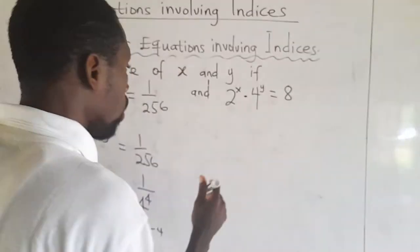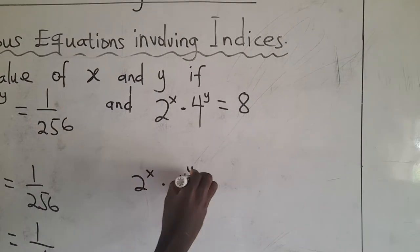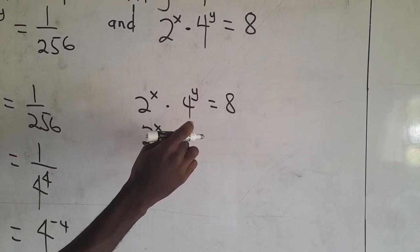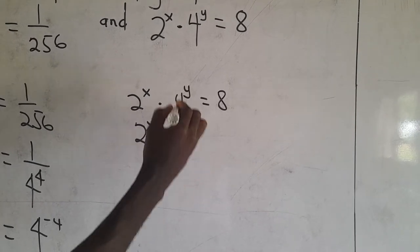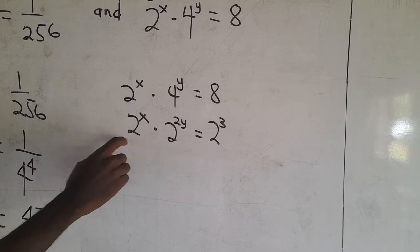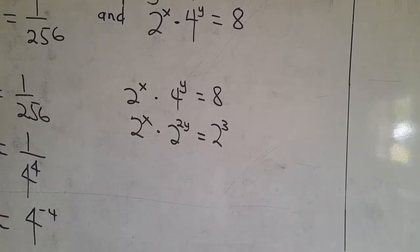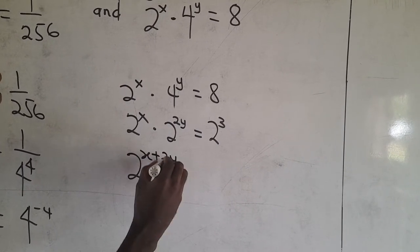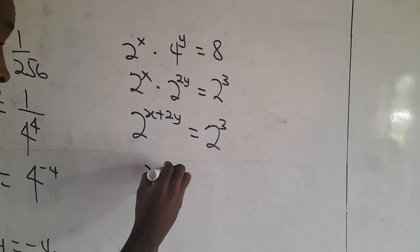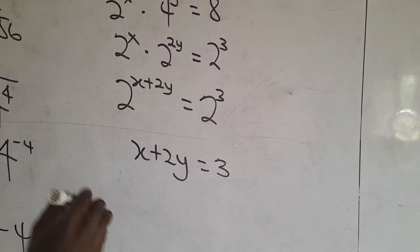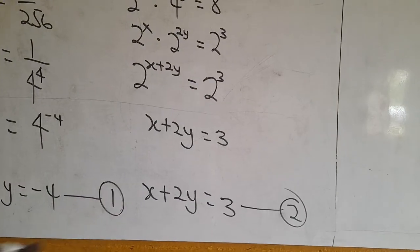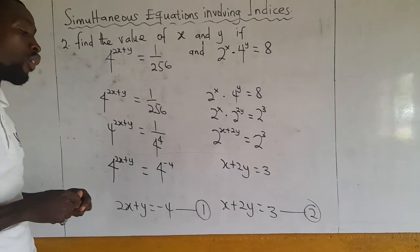Taking the second equation: 2 exponent x times 4 exponent y equals 8. We can change 4 to have a base of 2, since 4 is 2 exponent 2. So we get 2 exponent x times 2 exponent 2y. And 8 is 2 exponent 3. Since both indices are multiplying with the same base, we add exponents: 2 exponent x plus 2y equals 2 exponent 3. Since the bases are the same, we equate the exponents: x plus 2y equals 3. This is equation 2. We can now solve these two equations simultaneously.